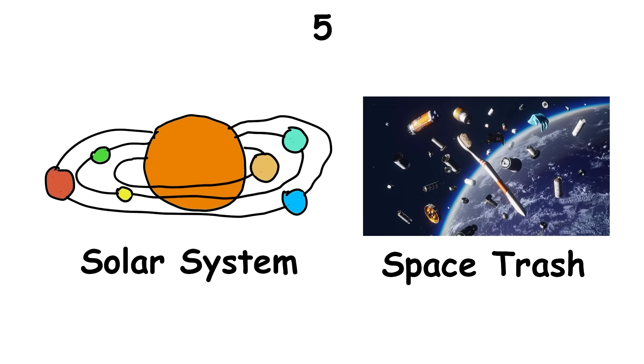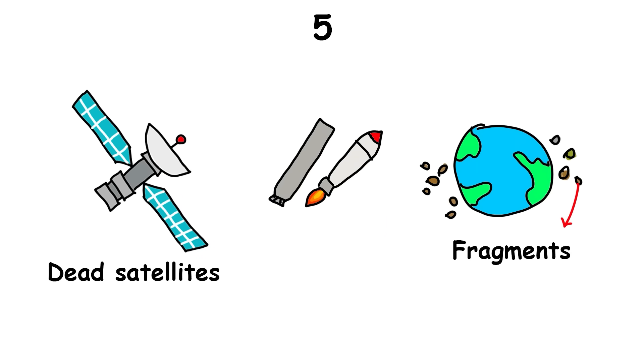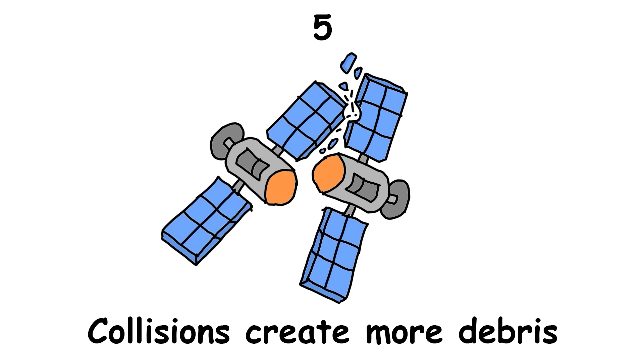Our solar system is filled with space junk. Thousands of dead satellites, spent rocket stages, and fragments orbit the Earth. If this debris continues to accumulate, it could lead to Kessler syndrome, where collisions create more debris, eventually trapping us on Earth and making space travel impossible.